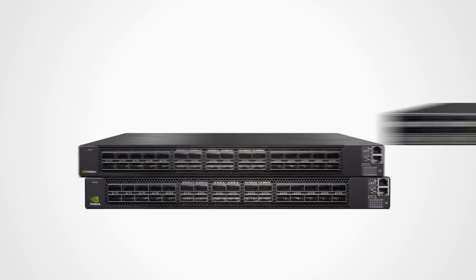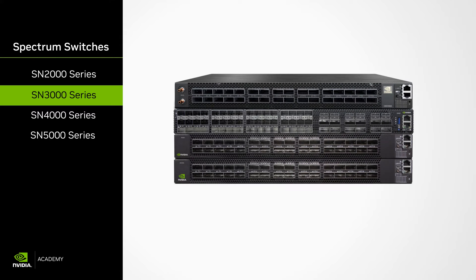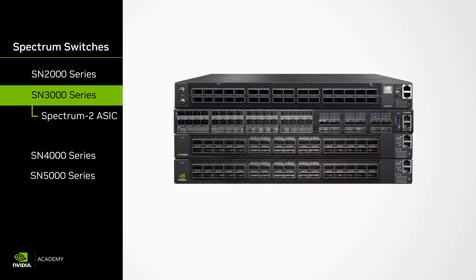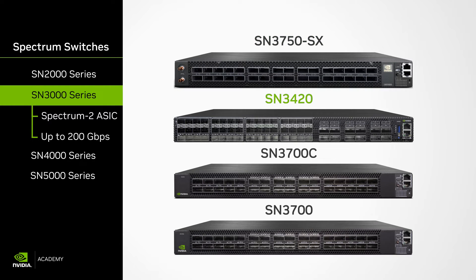The second series of products introduced in this video is the SN3000 series. These switches use Spectrum 2 ASICs, allowing them to operate at rates of up to 200 Gigabits Ethernet. These switch models include SN3750SX, SN3420, SN3700C, and SN3700.